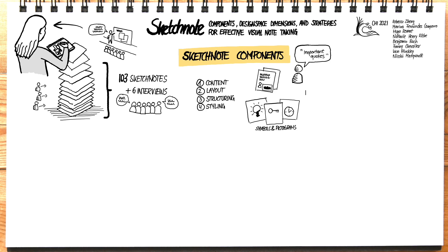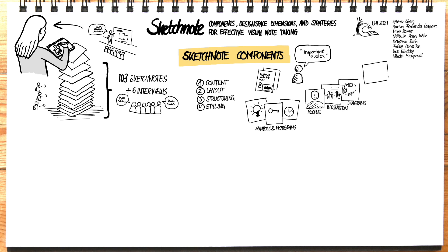Other visual elements include drawings of people, such as a person giving a talk, custom illustrations of different situations, diagrams about a process or design space, or elements to make structure emerge and organize content in higher-level blocks.